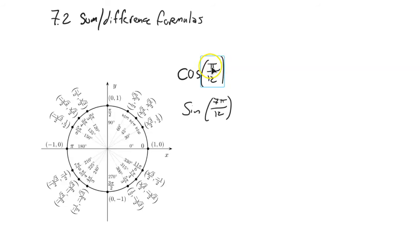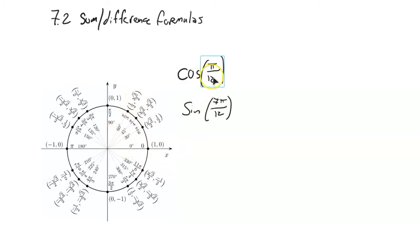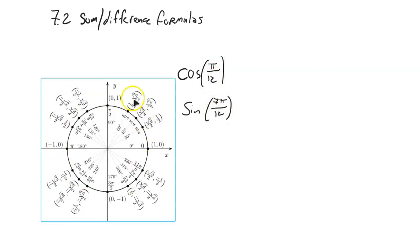For example, if I want the exact value of cosine of pi over 12, it's not on my unit circle. I can get the exact value of cosine of pi over 3 — cosine's width — that's 1/2. Or sine of pi over 3, that's the height, the y-value: root 3 over 2. But notice things like pi over 12 and 7pi over 12 are not on here.